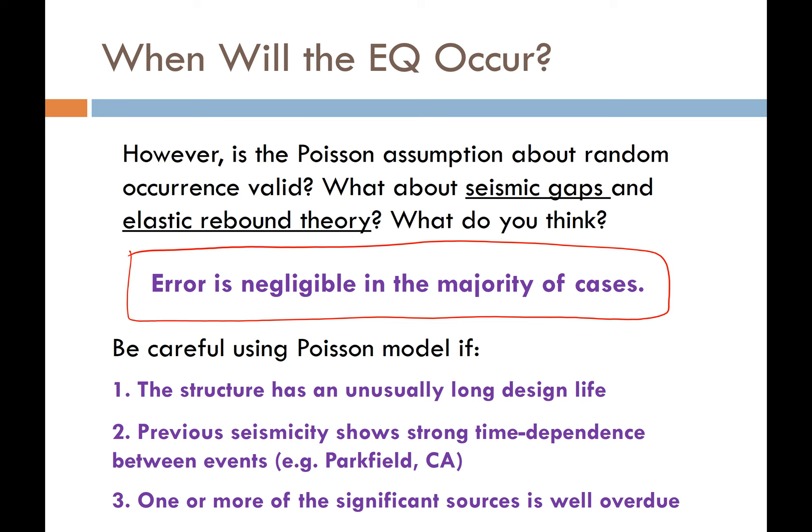There are cases where the Poisson probability model may not be appropriate: if a structure has an unusually long design life, such as the Yucca Mountain nuclear waste storage containment with a 10,000-year design life; if seismicity shows very strong time dependence between events, so we can predict when the next earthquake will occur; or if one or more significant seismic sources in the area are well overdue — for example, the Brigham City segment of the Wasatch Fault is about 1,000 years overdue for its rupture.